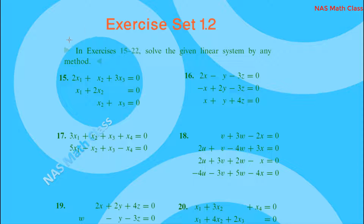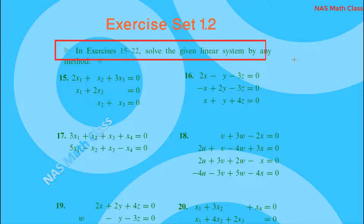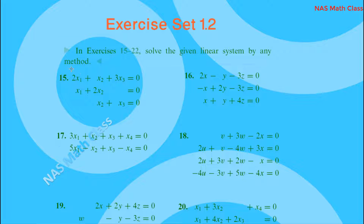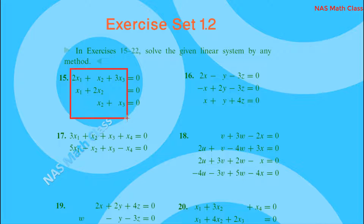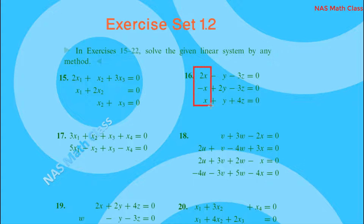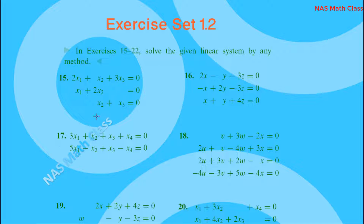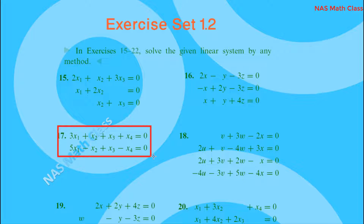Exercise set 1.2: Here we have a homogeneous system of linear equations with three equations and three variables (three unknowns). We can observe that this homogeneous system of linear equation has a solution. Here we see the unknowns compared against the equations.